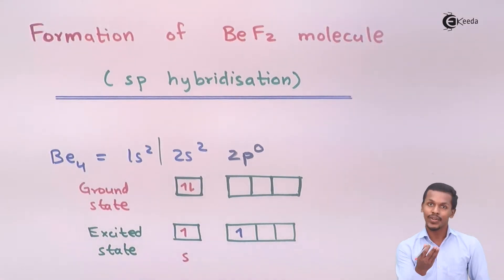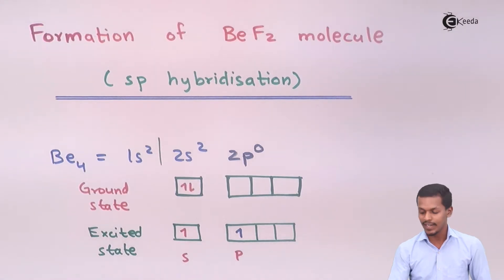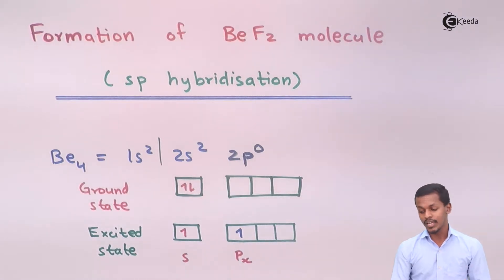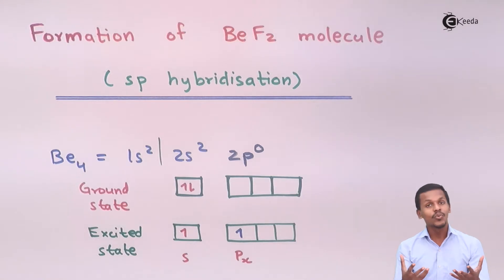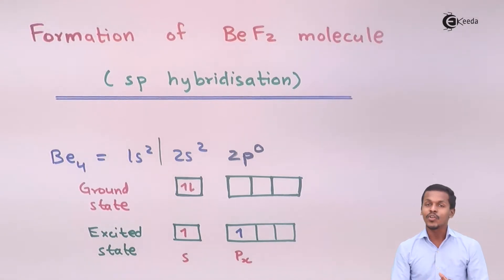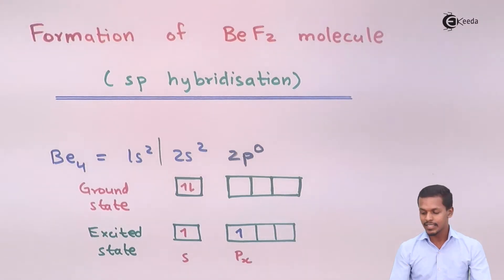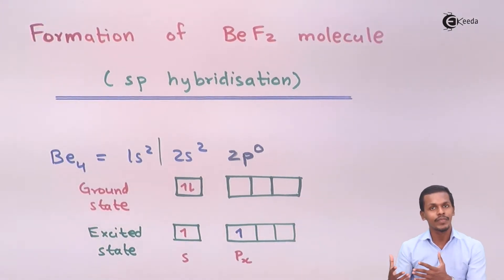So now we have two unpaired electrons: one present in the s orbital and one present in the px orbital. Because of valence bond theory, two fluorine atoms can accommodate their unpaired electrons in these orbitals. But we are talking about hybridization — the central beryllium atom will undergo hybridization, creating new hybrid orbitals that will be involved in bonding with the fluorine atoms.